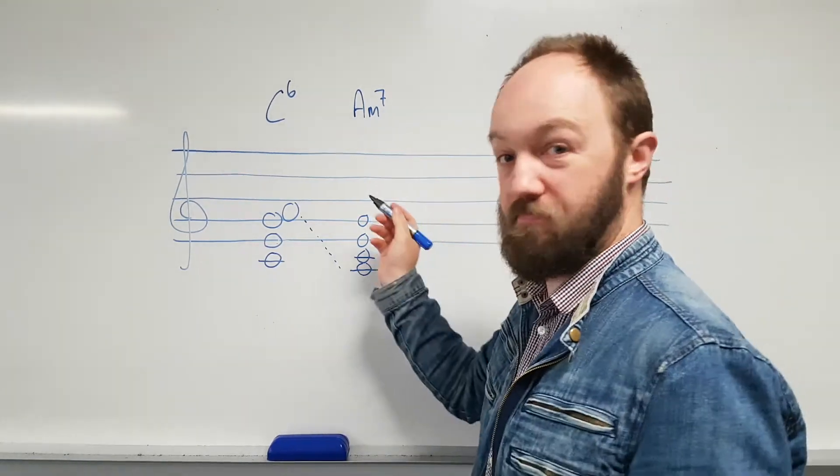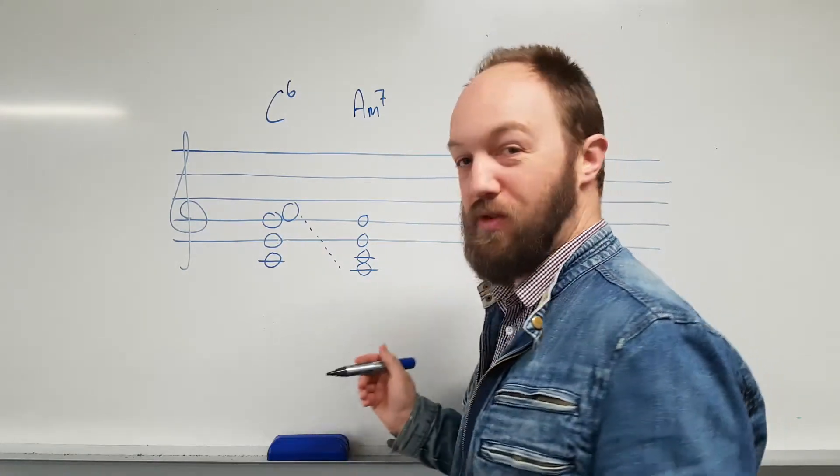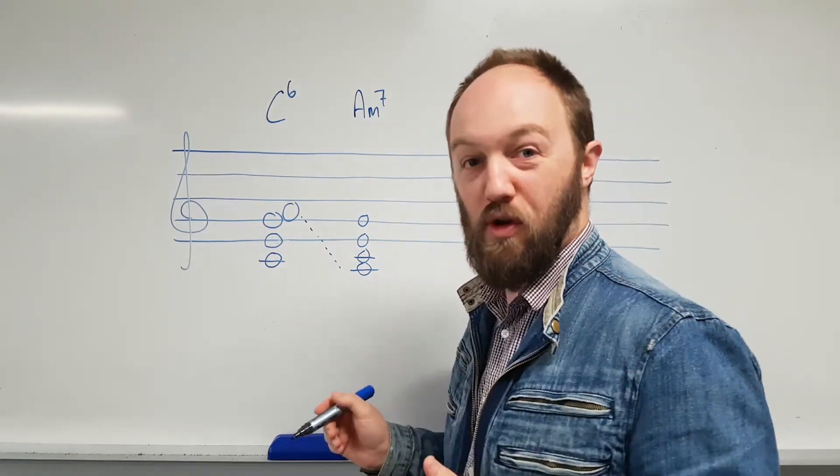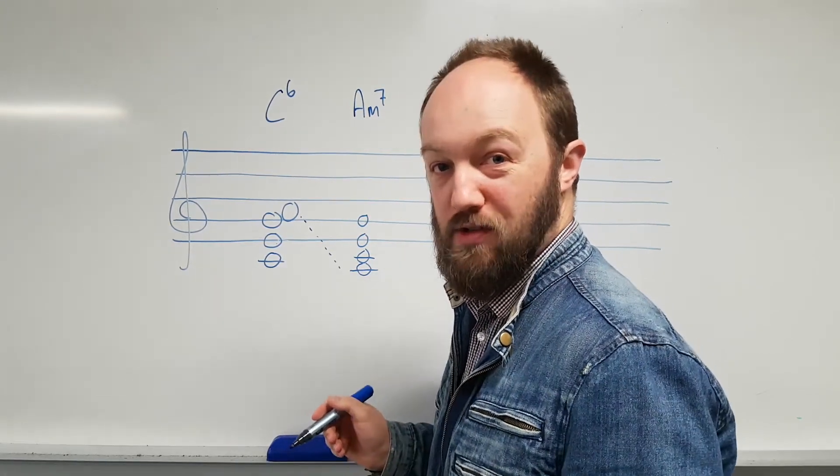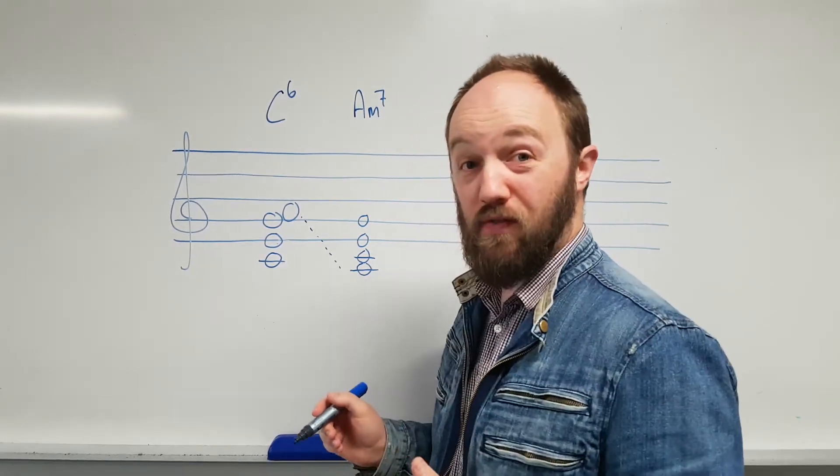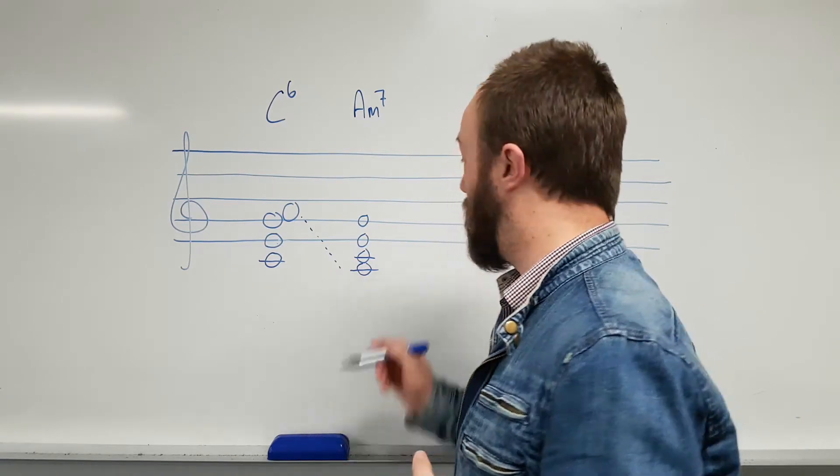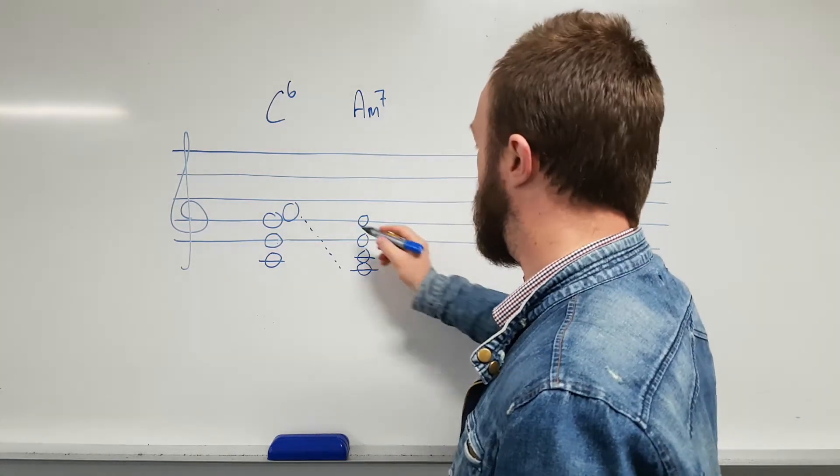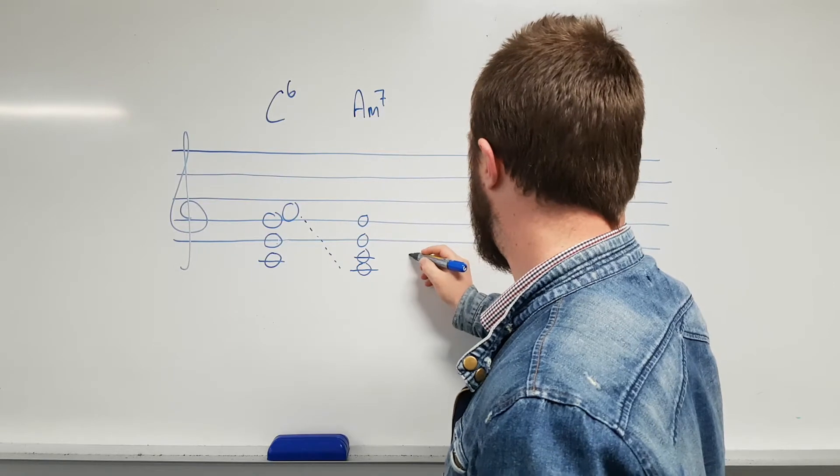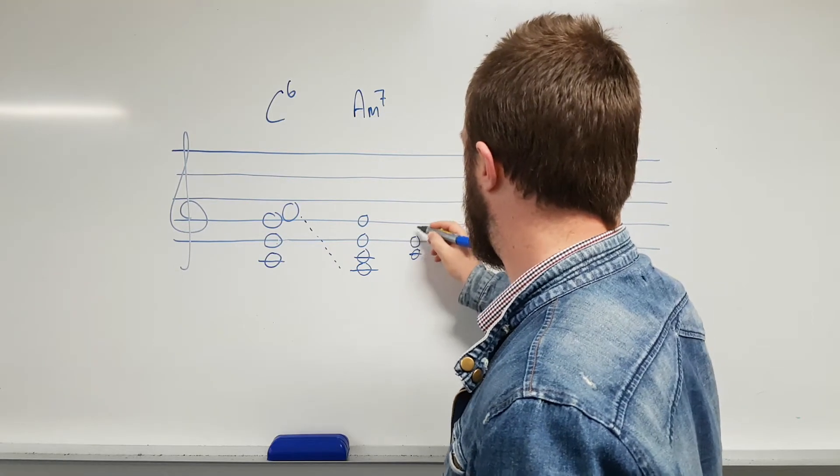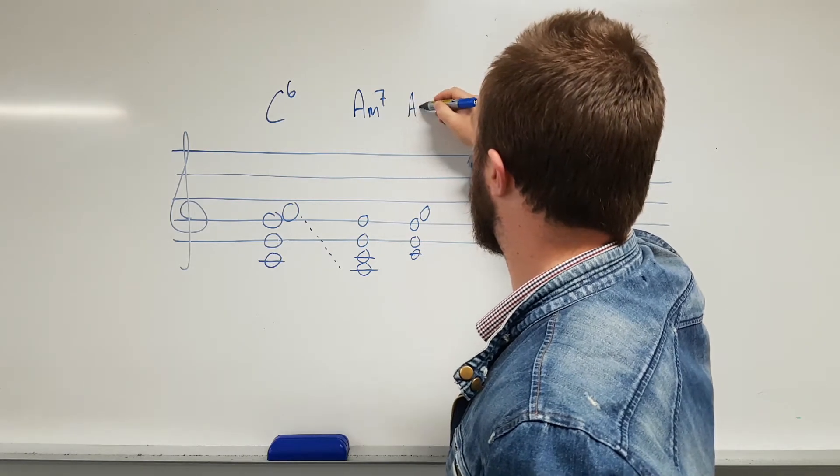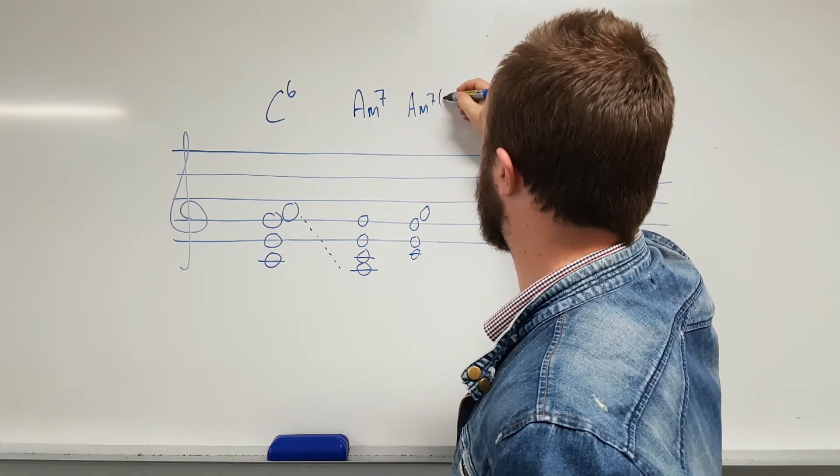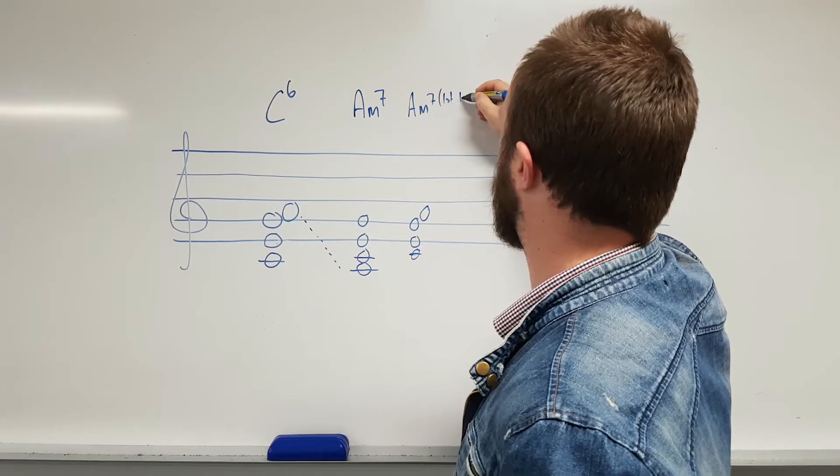And remember, when we're doing inversions, the root position is with the root note on the bottom, first inversion is the third on the bottom, second inversion is the fifth on the bottom, and third inversion is with the seventh on the bottom. So we move this back up again, and we have also an A minor seventh chord in first inversion.